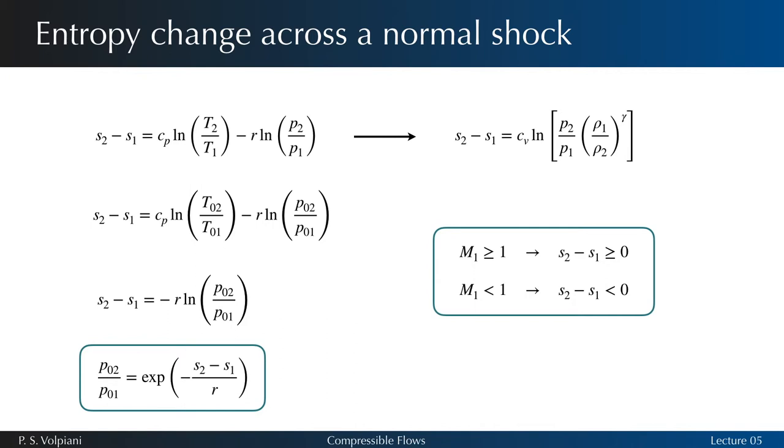Therefore, the only possible normal shock transitions are those where the density, pressure and temperature increase across the shock and the flow velocity decreases. The opposite situation would violate the second law of thermodynamics.